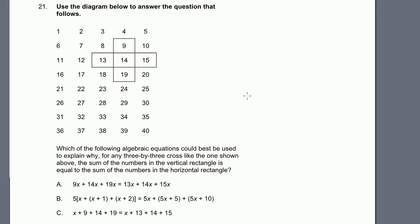Problem 21. Use the diagram below to answer the question that follows. OK, they just have numbers listed in order, and they have 5 per row. Which of the following algebraic equations could best be used to explain why? For any 3 by 3 cross, like the one shown above, the sum of the numbers in the vertical rectangle, so this is the vertical rectangle right there, is equal to the sum of the numbers in the horizontal rectangle.